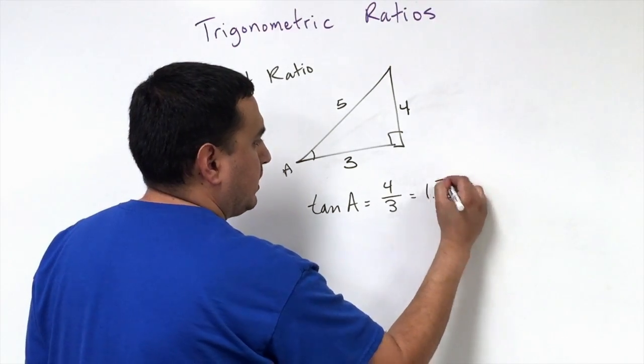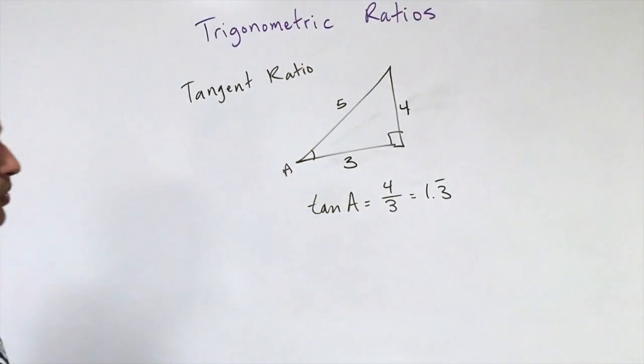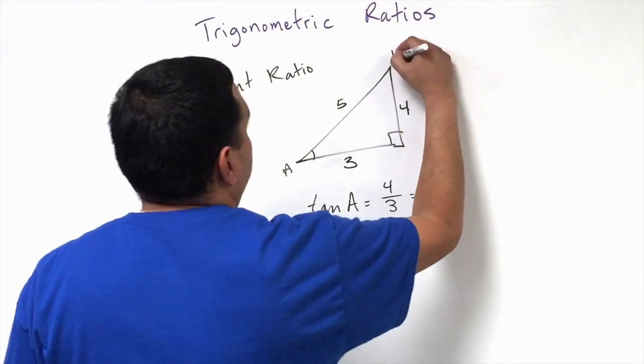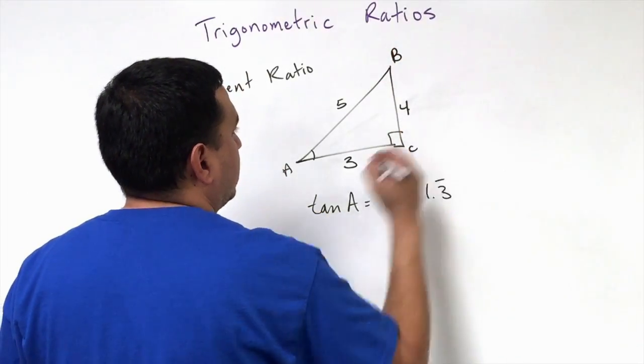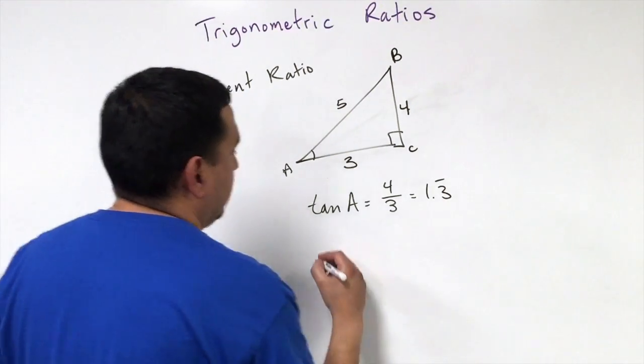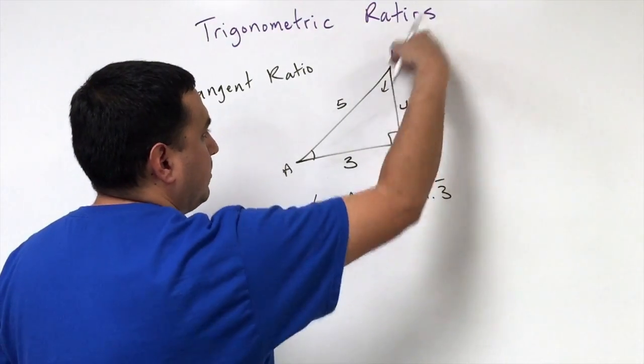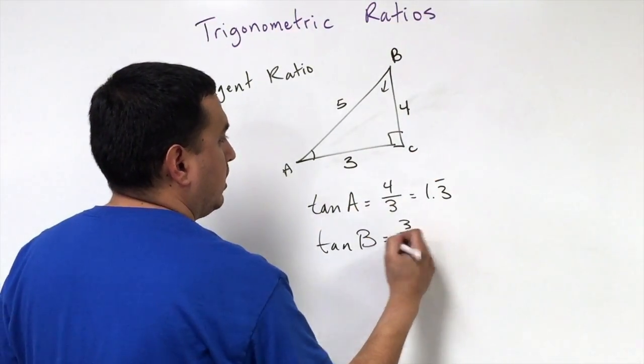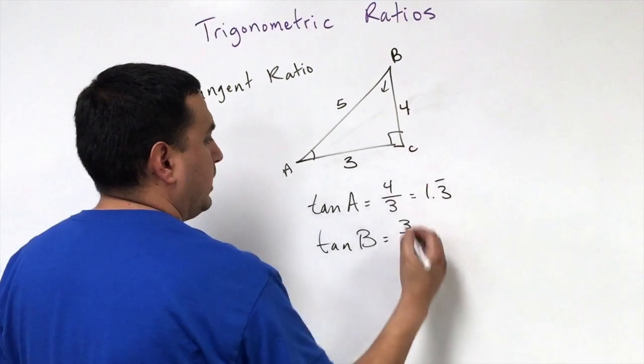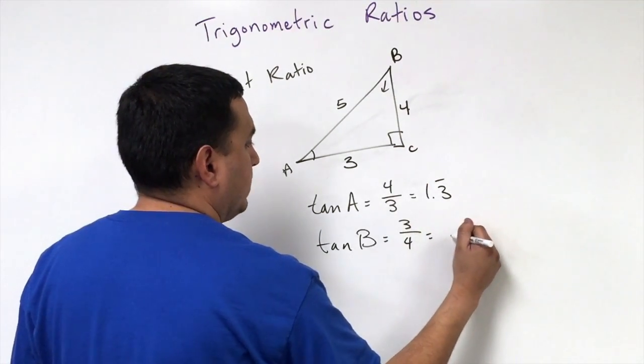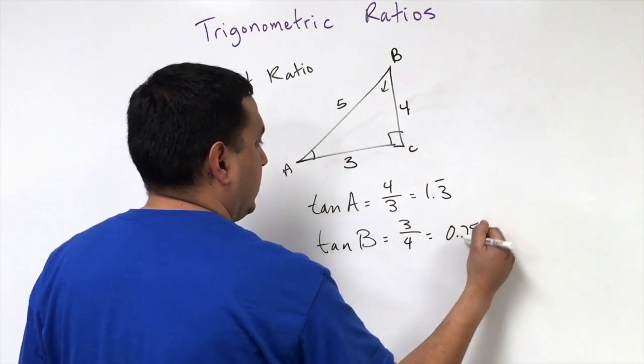1.3 with the line on top—one and one third. If I label this one B, then the tangent of B is going to equal the opposite of B, going across, which would be 3, and then the adjacent leg would be 4. So this would be 0.75.